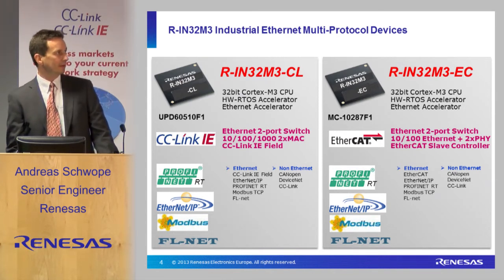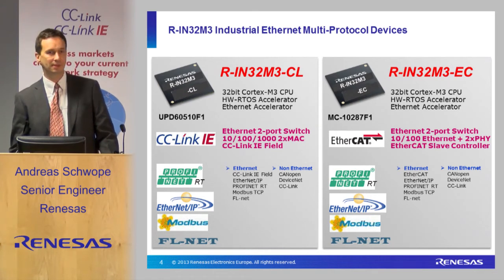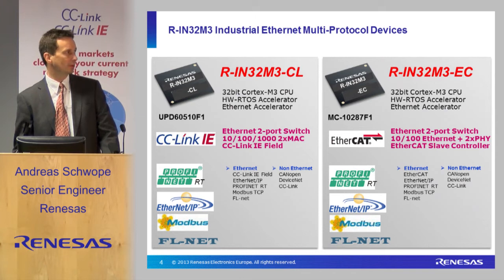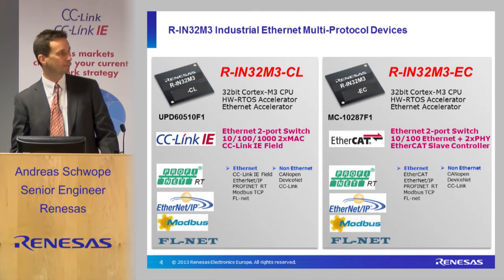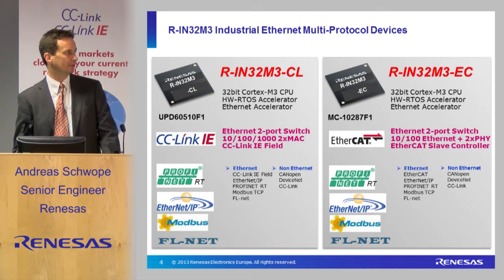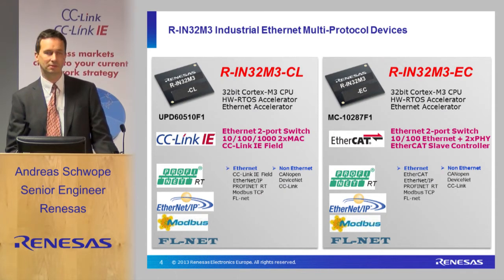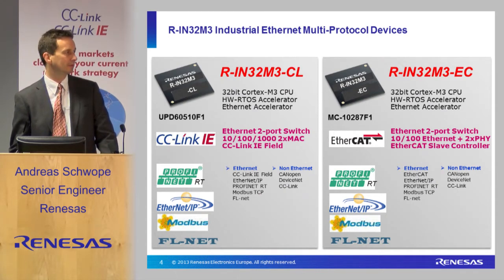What Renesas currently has available are two family devices. On the left-hand side you see the RIN 32. CL stands for CC-Link, so this is capable to drive a CC-Link network with Gigabit Ethernet. Further on, as it's a multi-protocol device, some other protocols are also supported. On the left-hand side are the Ethernet protocols, and on the other side non-Ethernet protocols based on different hardware like CANopen and other things. Here you can also find CC-Link.